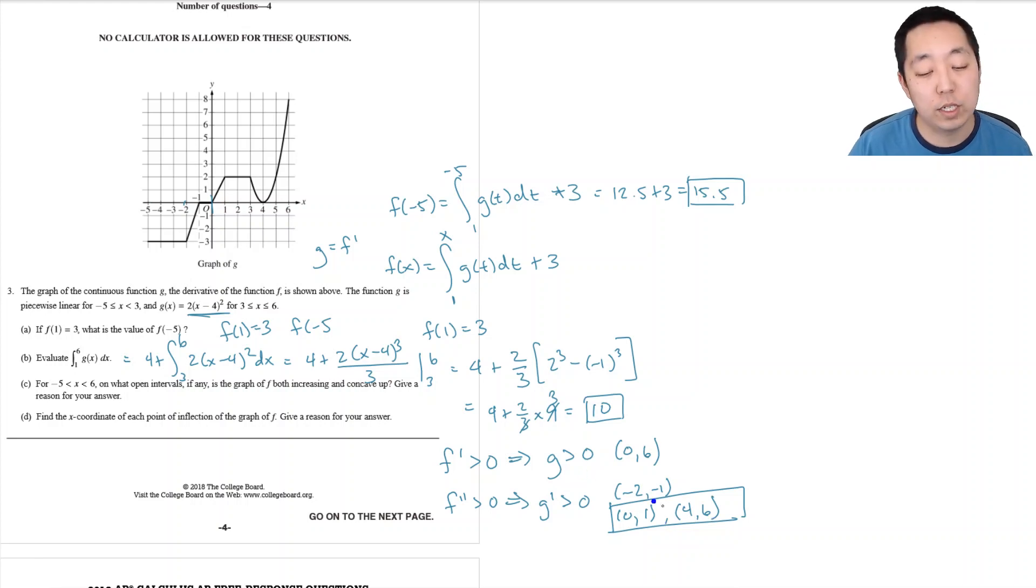So what's the intersection of these two when it's both? It's just this interval here between 0 and 1 and 4 and 6. It's both increasing and concave up because the concave up means the second derivative is positive, and slope up or when the function is positive, that's when the first derivative is positive, that's when g is greater than 0.